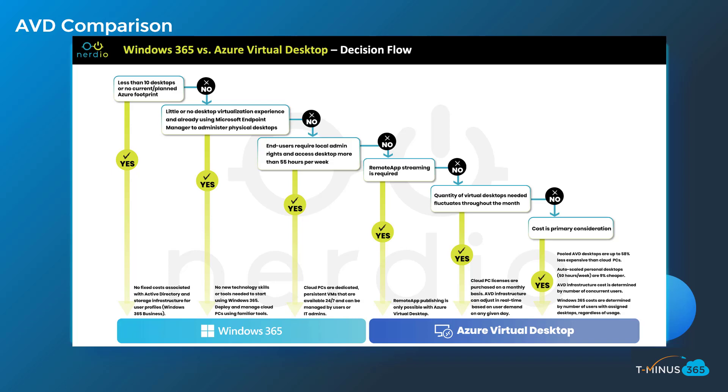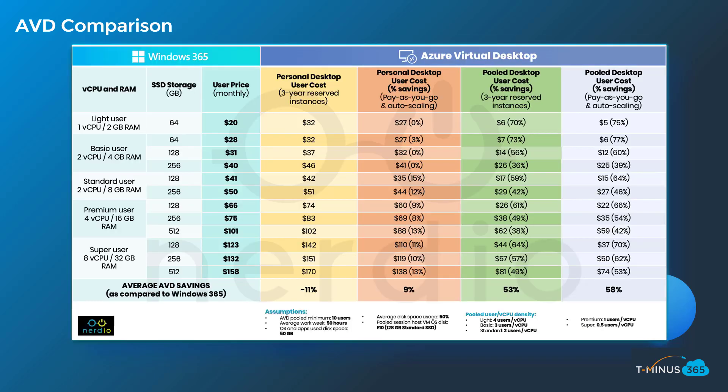I'll link those resources below. My essential takeaway is that if cost is a primary consideration, you're likely to go with Azure Virtual Desktop. They show a great comparison where if you are leveraging pooled hosts, an auto-scaling solution, and reserved instances, you could save up to 58% over Windows 365. I highly encourage you to check out those resources — that's probably the best comparison in the market today.